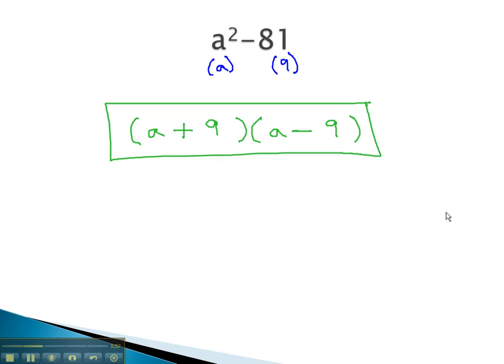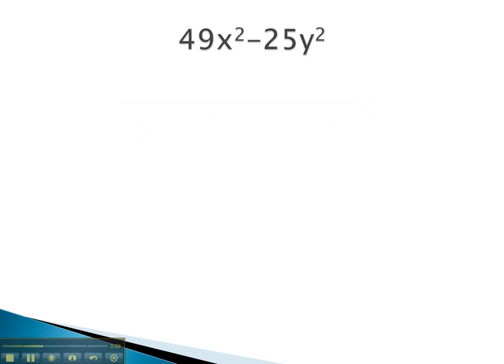Let's take a look at another example. In this problem, we again see we are subtracting two terms. We can take the square root of both terms. The square root of 49x squared is 7x. The square root of 25y squared is 5y.